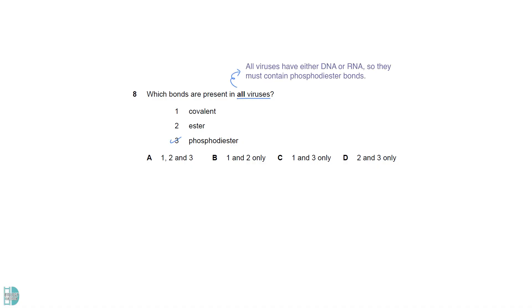All viruses have either DNA or RNA, so they must contain phosphodiester bonds. Phosphodiester bond is a covalent bond, so 1 and 3 are correct. Some viruses have lipid envelopes. But this is not a feature of all viruses, so not all of them have ester bonds.